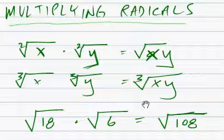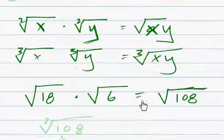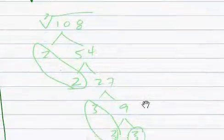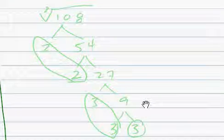Alright, so 18 times 6 is 108. I did that in my head, actually. I just did 6 times 8, that's 48. 6 times 10 is 60, so 60 plus 48 is 108.